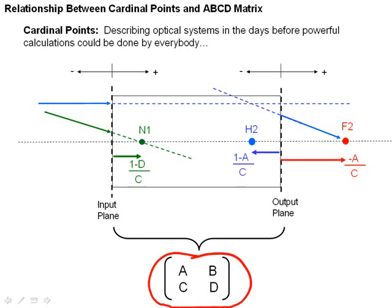It turns out that all the distances in the cardinal points can be defined by a ray matrix. For example, if you take the ray matrix of the system and take the ratio of A over C and take the negative sign of it, it, in fact, gives you point F2. In this case,